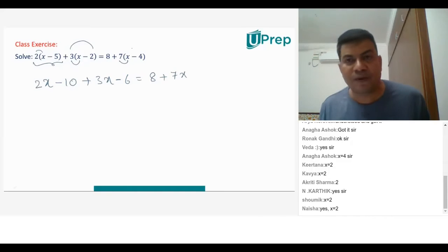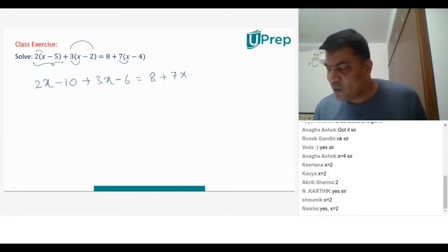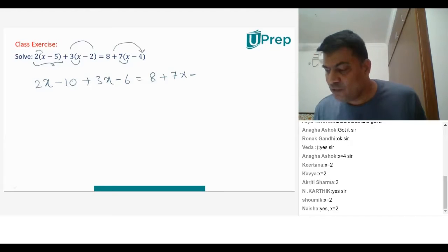That is the distributive property that you will use over multiplication. Now why minus? Because of this minus — plus into minus. So basically 7 into 4 is 28, yes minus 28.